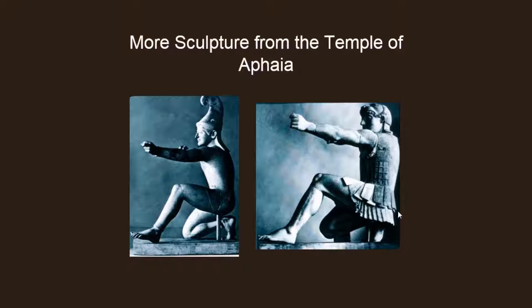Here's more sculpture from the Temple of Aphaia. Notice these archers and the study of anatomy: the articulation of the knee, the turn of the foot, the strength in the arm as he holds the bow, pulling the arm back, and the concentration in the gaze.